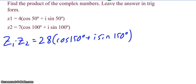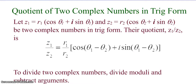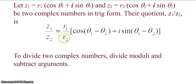What about the quotient — division of complex numbers in trig form? Pretty straightforward. If z1 is r1 times cosine theta 1 plus i sine theta 1, and z2 is r2 times cosine theta 2 plus i sine theta 2, then their quotient z1 over z2 is r1 over r2 times the cosine of theta 1 minus theta 2, plus i sine of theta 1 minus theta 2. In this case, we divide the moduli and subtract the arguments.